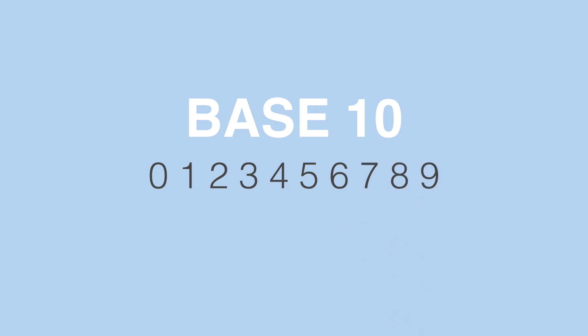Decimal is what we call a base 10 number system, and by that we mean that there are 10 digits available for us to use: 0, 1, 2, 3, and so on through to 9. Binary is a base 2 number system, which means that we only have two digits available for us to use, namely 0 and 1. So any number represented in binary can only consist of 0s and 1s.